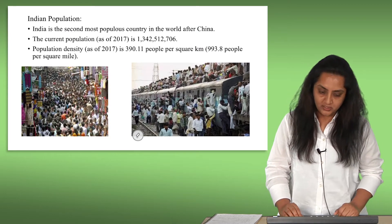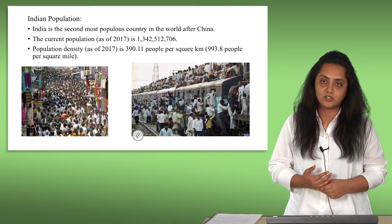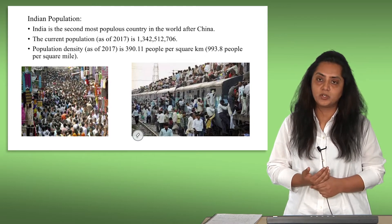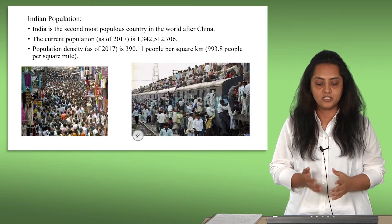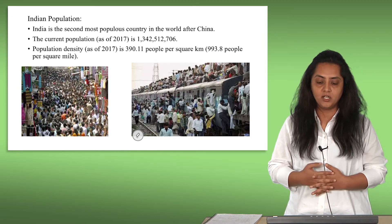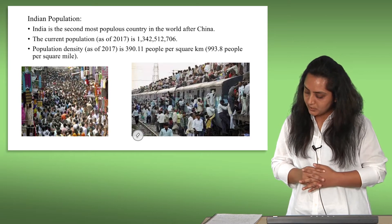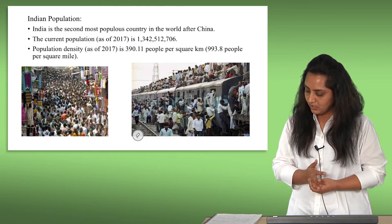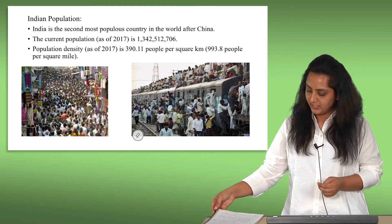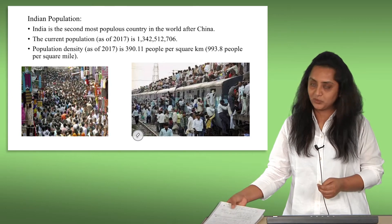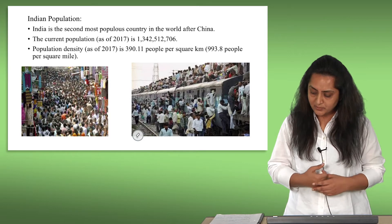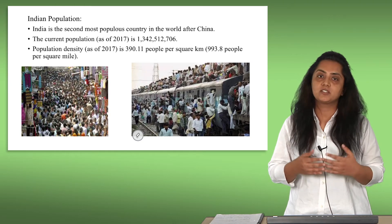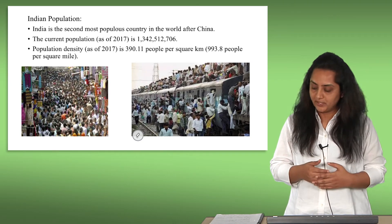Let us talk about the Indian population. India is the second most populous country in the world after China. The current population is over 1 billion, and the population density as of 2017 is 390.11 people per square kilometer, based on the number of births, deaths, and net migration rates. India's population makes up 17.5% of the world's population. Many people from rural areas migrate to urban areas because there are chances of better living and a better lifestyle.